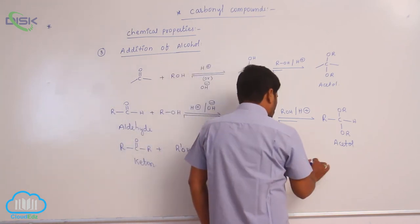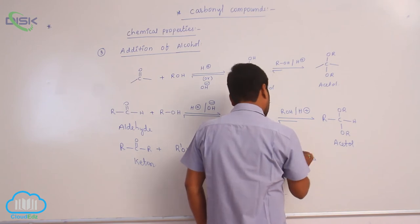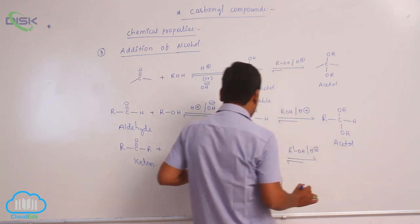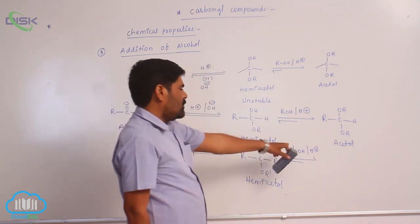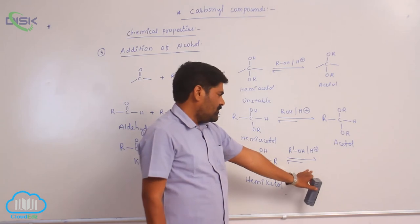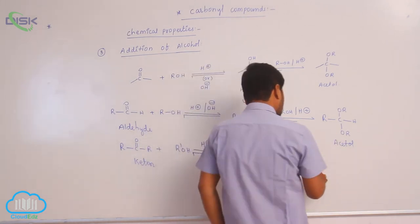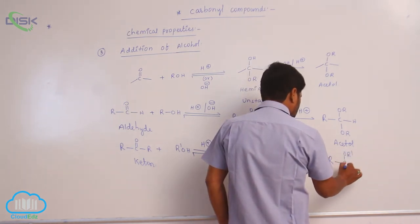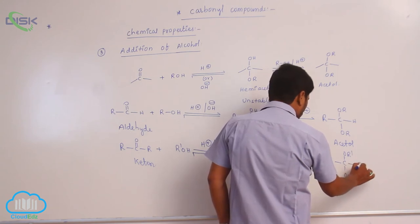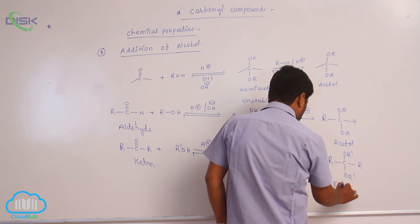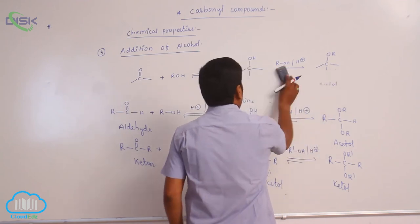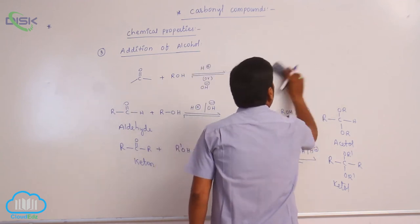In the presence of acid medium or basic medium, it forms a hemiketal with two OR groups. This hemiketal again reacts with an alcohol in the presence of acid medium. The first step takes place in acid as well as basic medium, but the second step always takes place in acid medium only. The final product has two OR groups and is known as a ketal.